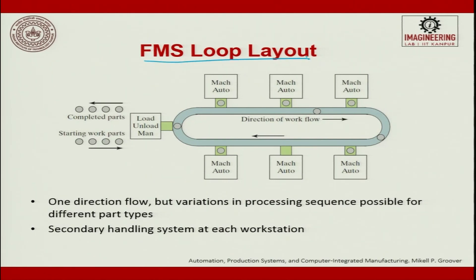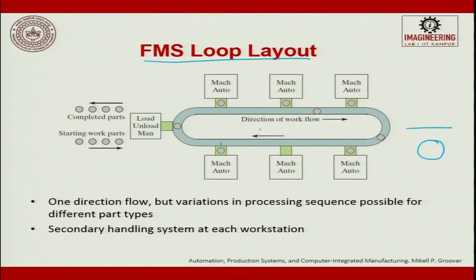The FMS loop layout converts the straight line into a circle — like conveyor belts in an airport. You start at the loading station and it keeps coming back to the start. The advantage is that more machines can be placed around the conveyor, reducing floor space. One-direction flow is used, but variation in processing sequence is possible for different parts; a secondary handling system is present at each station.